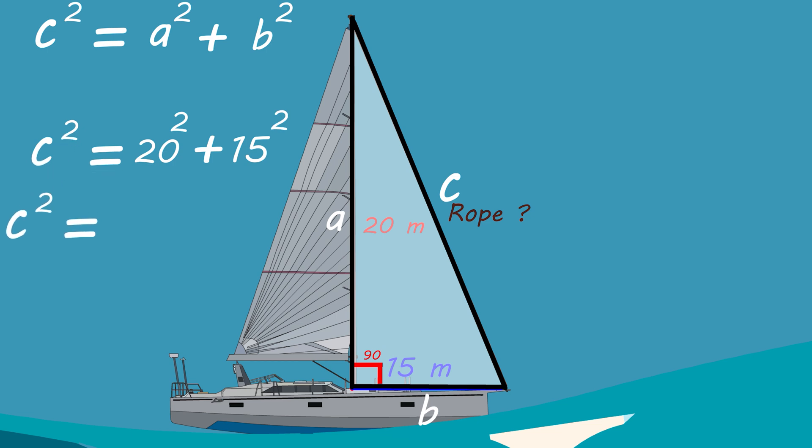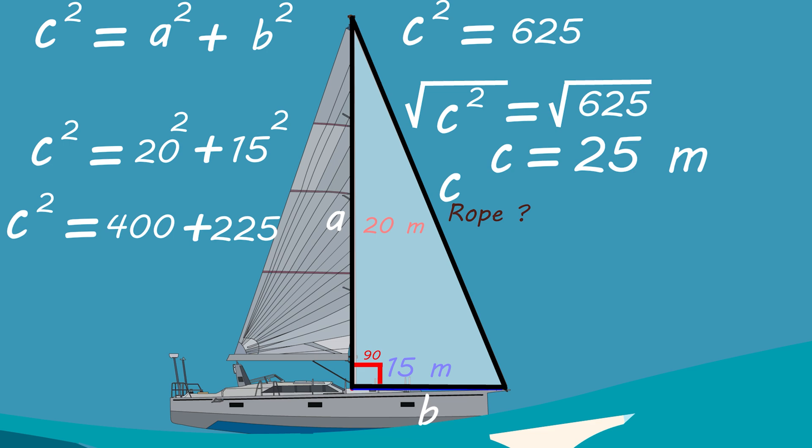So c square equals 400 plus 225, and this equals 625. By taking the square root for both sides, we get c equals 25 meters. So the rope length is 25 meters.